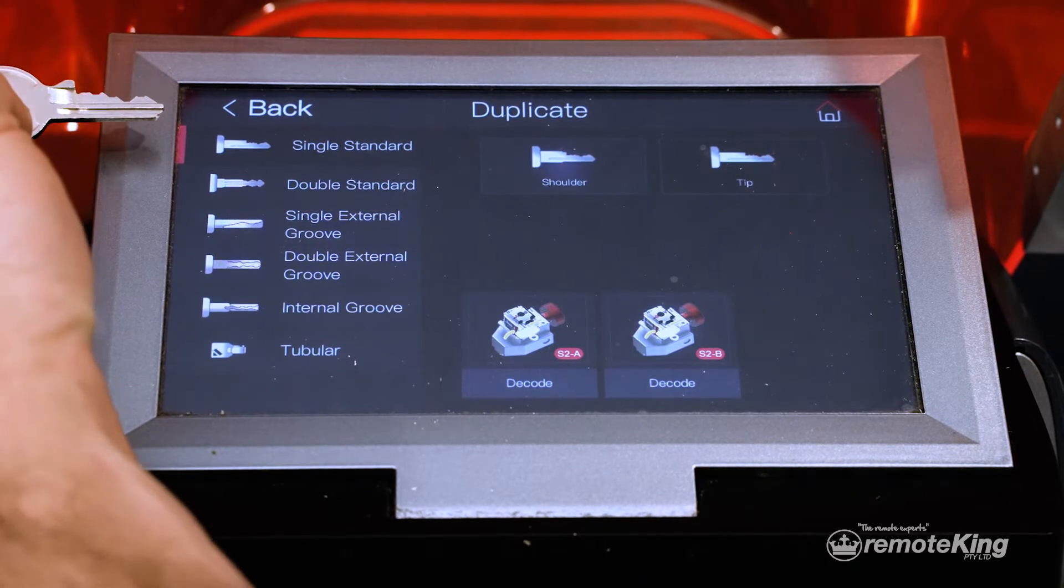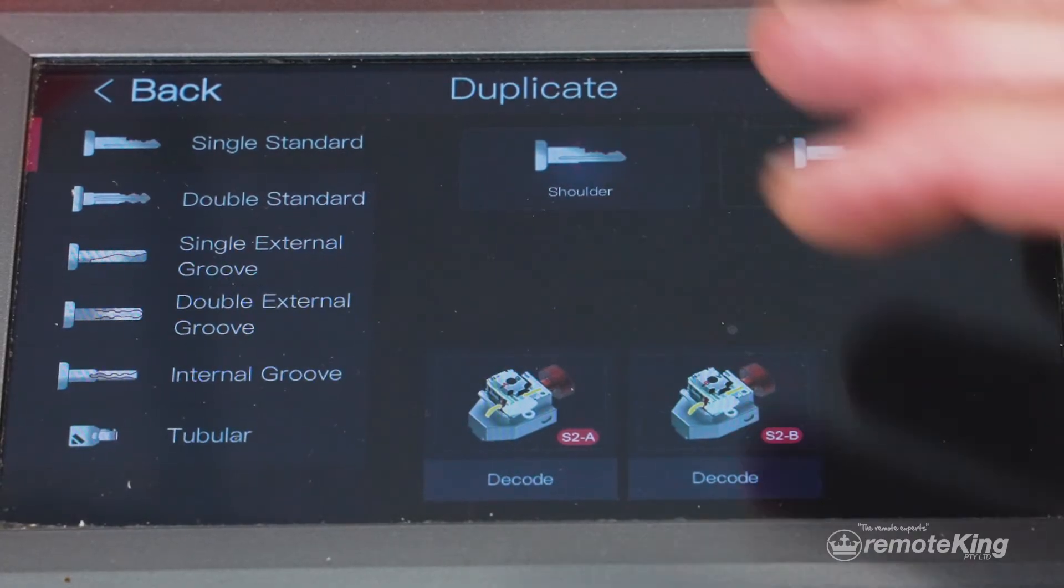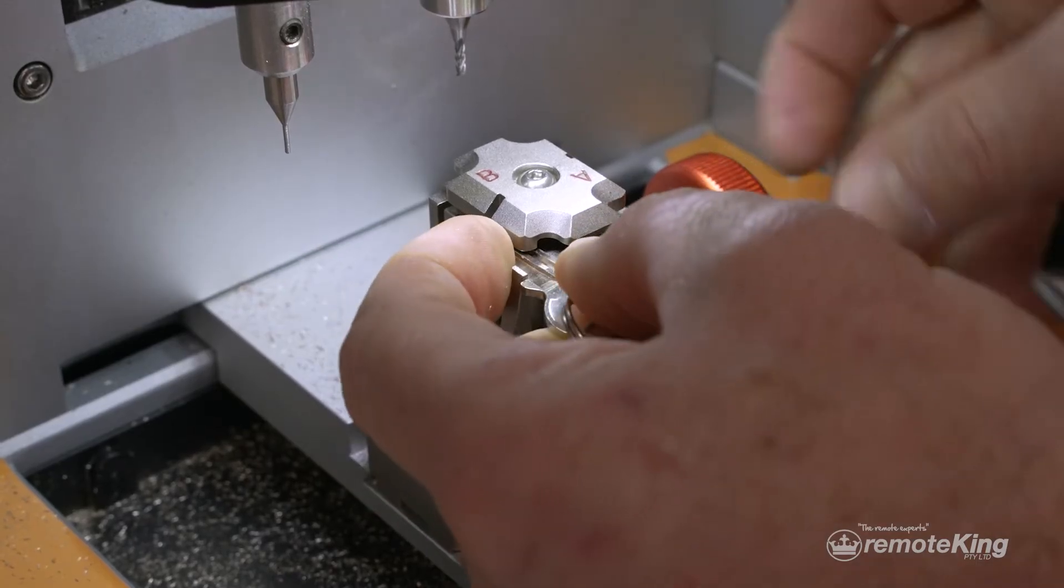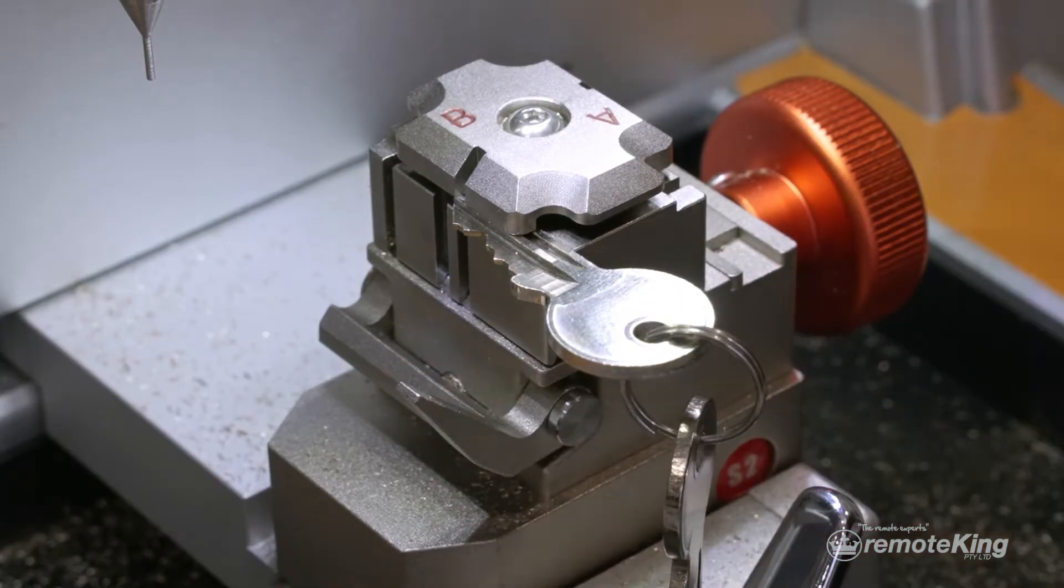What we're cutting today is a master padlock key. We're single standard and that one's off the shoulder. Insert the key, making sure that we remove the shoulder, then press decode.